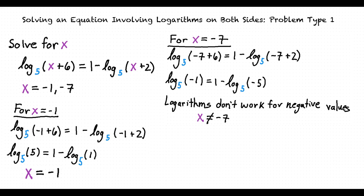To solve an equation involving logarithms on both sides, we must remember how to rewrite logarithms in exponential form, and the logarithm product, quotient, and power rules. We want to use the properties of logarithms to rewrite the two logarithms as one, then rewrite the logarithmic equation in exponential form so that we can solve for the unknown variable.